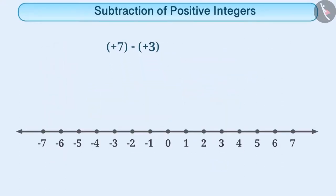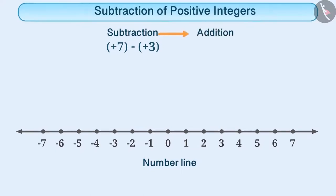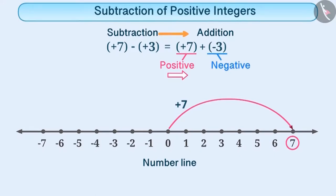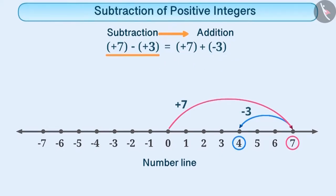Subtraction of integers can also be done on a number line. First, we will convert the operation of subtraction into an operation of addition. This means, in the place of plus 7 minus plus 3, we will write plus 7 plus minus 3. Now, the first number is plus 7. Since this is a positive integer, we will move 7 steps to the right of 0, and we will reach the number plus 7. The other number is minus 3. Since this is a negative integer, we will move 3 steps towards the left. Thus, we reach plus 4, which is the result of subtraction of plus 7 and plus 3.